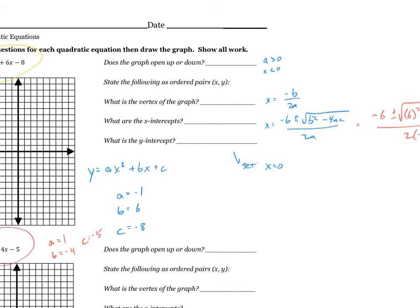When you find the vertex of the graph and all of these points, I want to see them as ordered pairs. So for the vertex, when you get x, you want to substitute that answer back in and find out what y is equal to. And then you're going to write down that as a coordinate x, y.